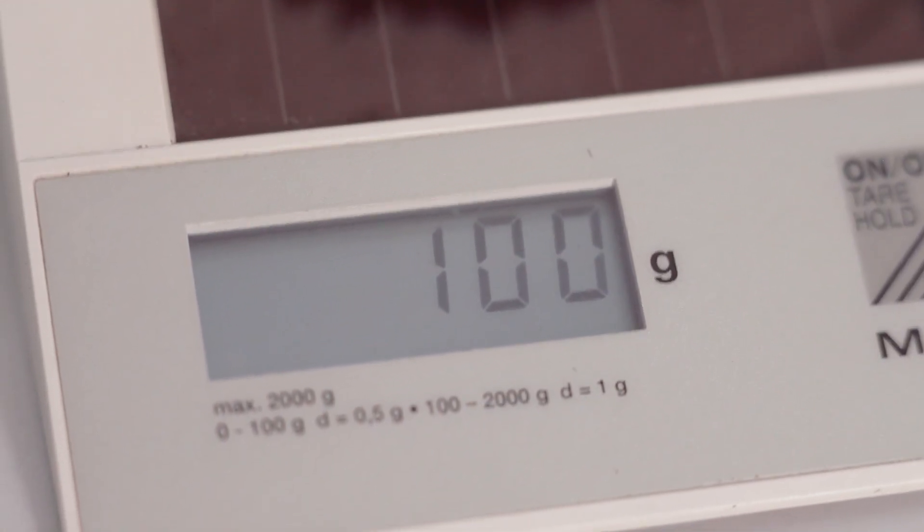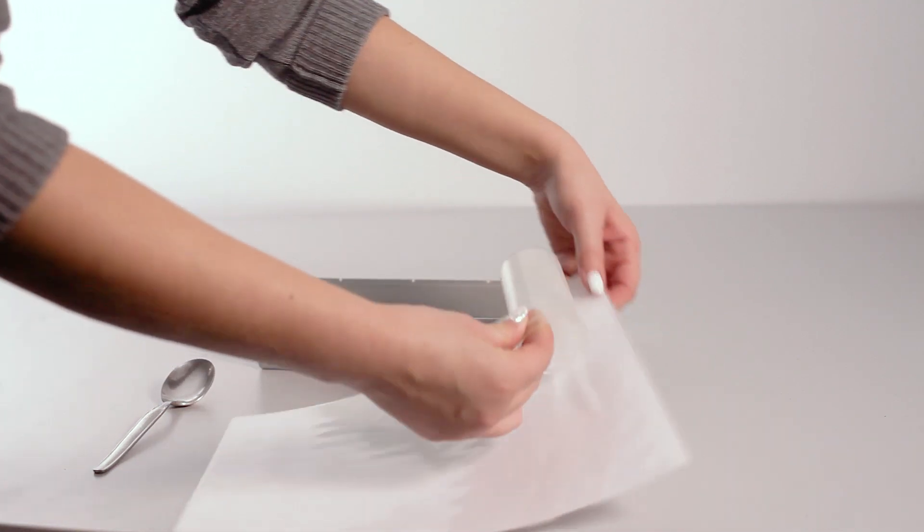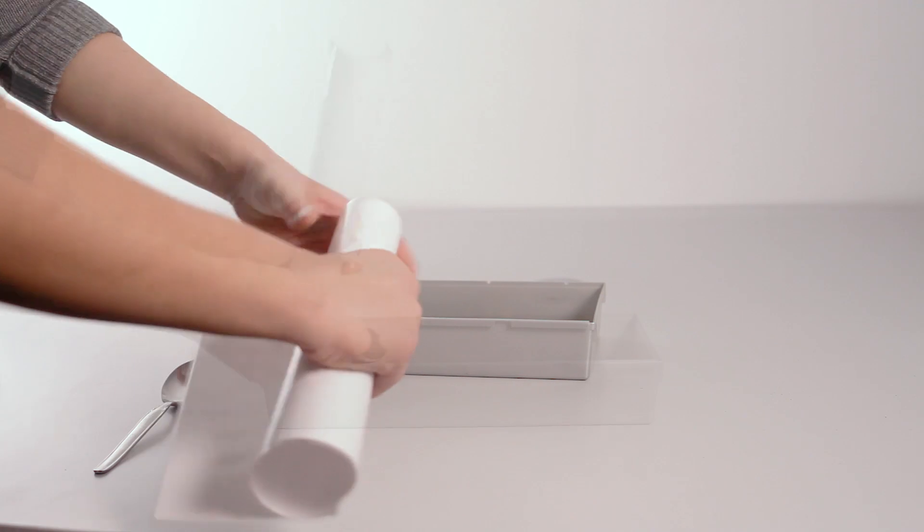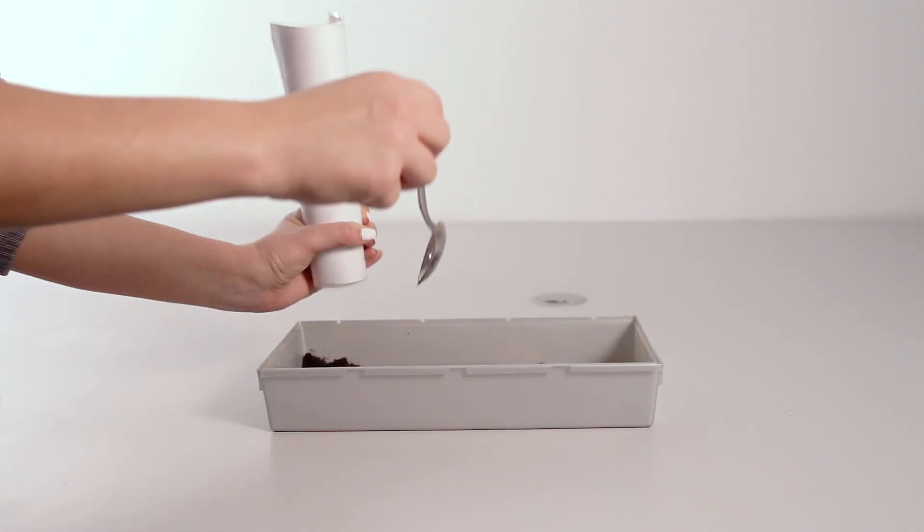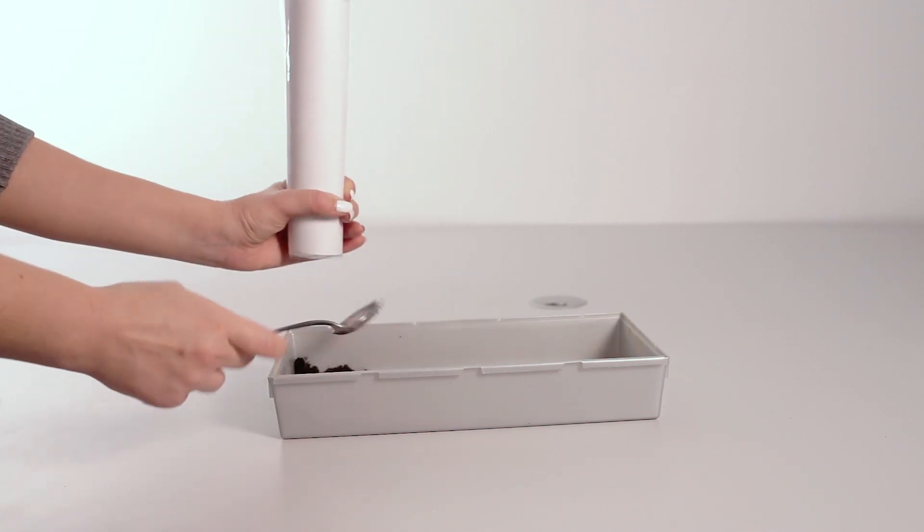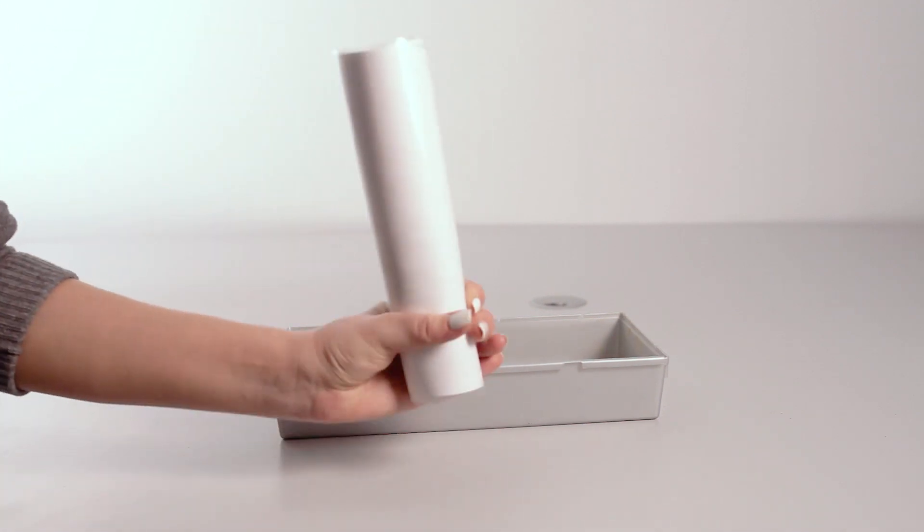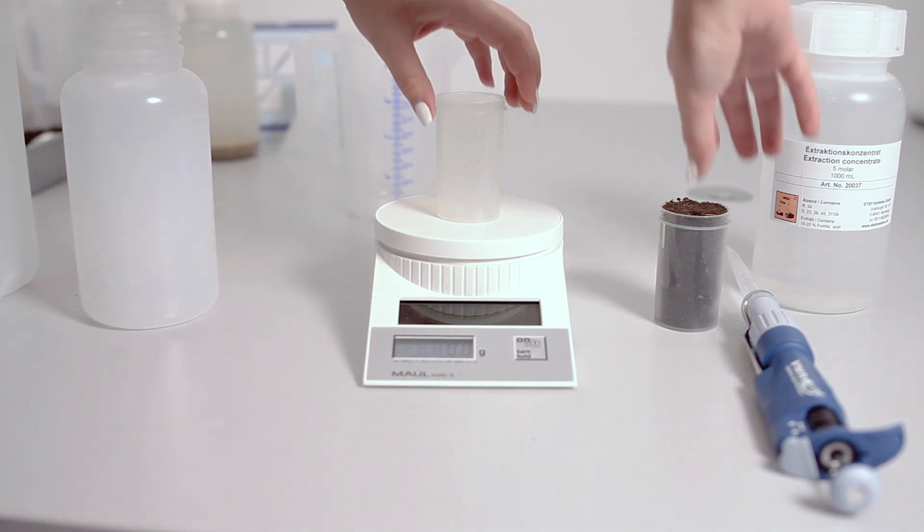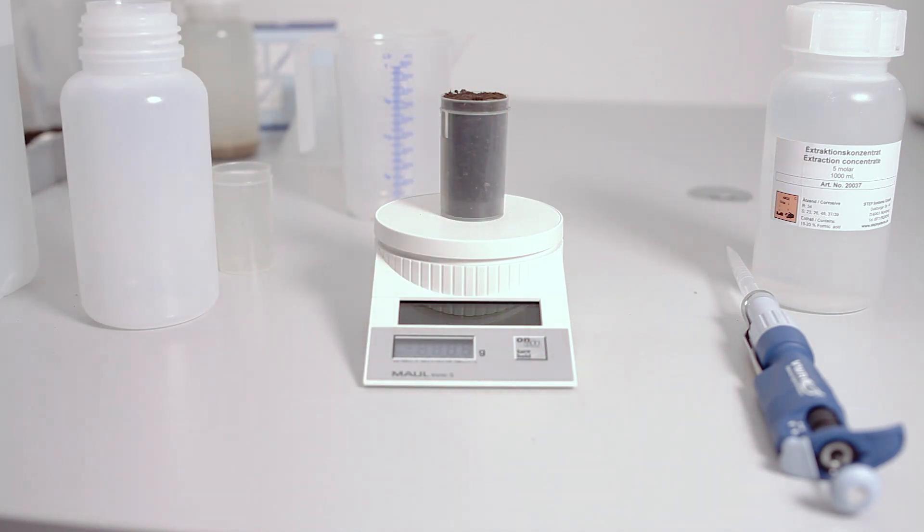If you are performing the analysis on substrates, then 100ml of sample should be used instead. To separate 100ml of sample, fill the volumetric beaker with substrate and knock it against a hard surface ten times. Then fill it up again. Afterwards the volume weight can be measured using a scale.